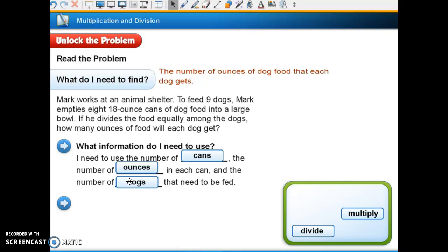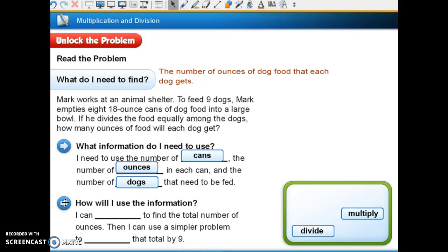They already have dogs in here, so you should write in cans and ounces. How will I use the information? I can blank to find the total number of ounces. What are we going to do to find the total number of ounces? If we have eight cans and they each have 18 ounces, what are we going to do? Multiply. I can multiply to find the total number of ounces, and I can use a simpler problem to divide that total by nine. Why are we dividing by nine? There's that many dogs.